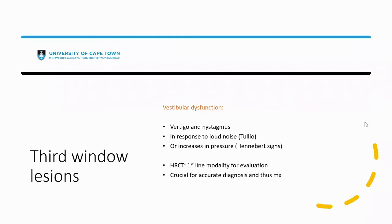Third window lesions can affect your vestibular function, and often patients present with symptoms such as vertigo and nystagmus. If vertigo and nystagmus are induced by a loud noise, we call that the Tullio phenomenon. If induced by increased pressure, we call that Hennebert sign — both are useful on history and clinical examination. When investigating third window lesions, you want a high-resolution CT scan as your first-line modality. MRI has a much more limited role. Your high-res CT scan is crucial for accurate diagnosis and will direct management depending on the cause.